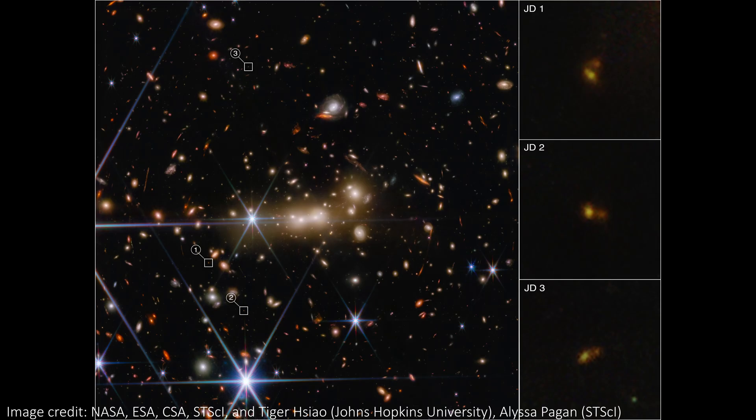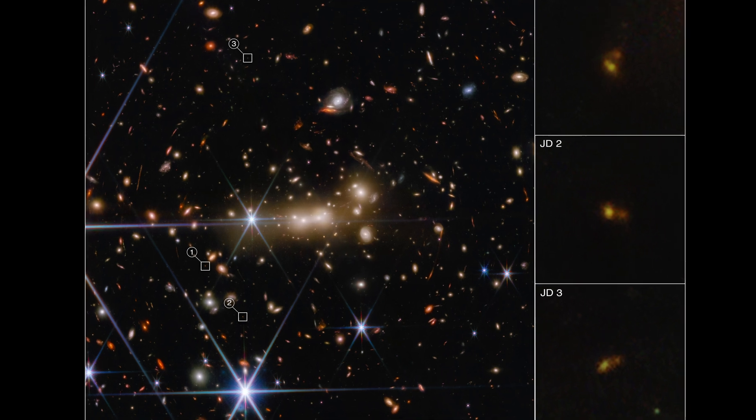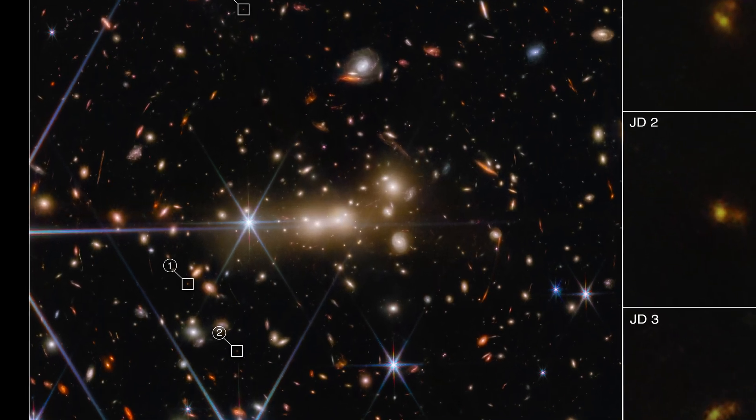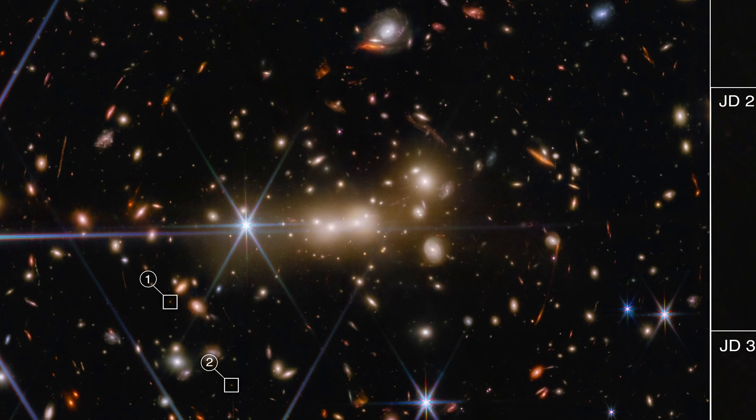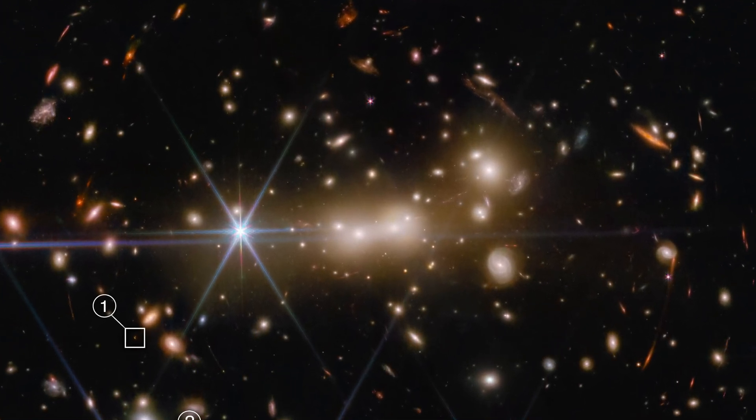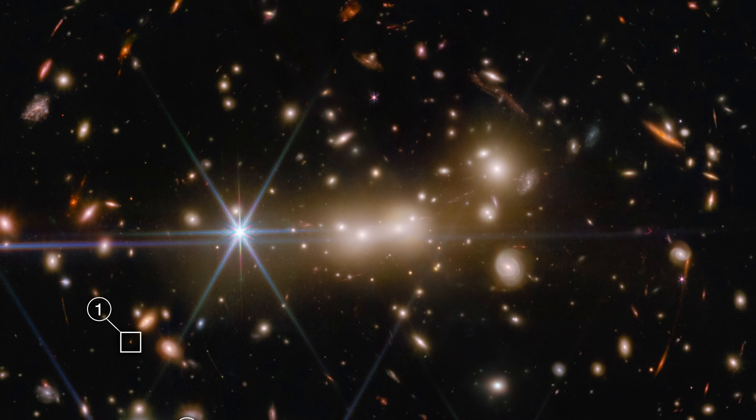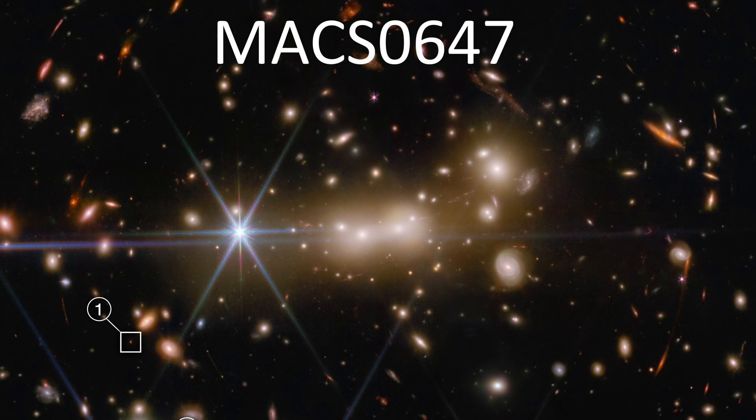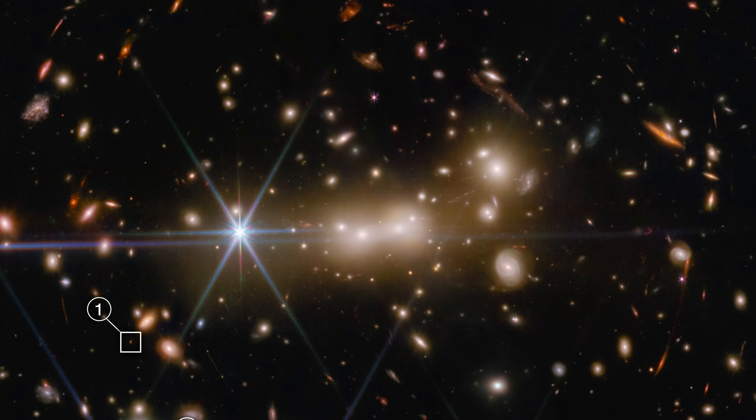Next up, take a look at this deep field image we've seen from JWST. The telescope was specially designed to see infrared light from the very early universe and to see some of the first galaxies to ever form. Here we have a galaxy cluster called MACS 0647 in the center of the image. This cluster is so massive that it bends space-time enough to both warp and magnify the light from even more distant and faint galaxies behind it.